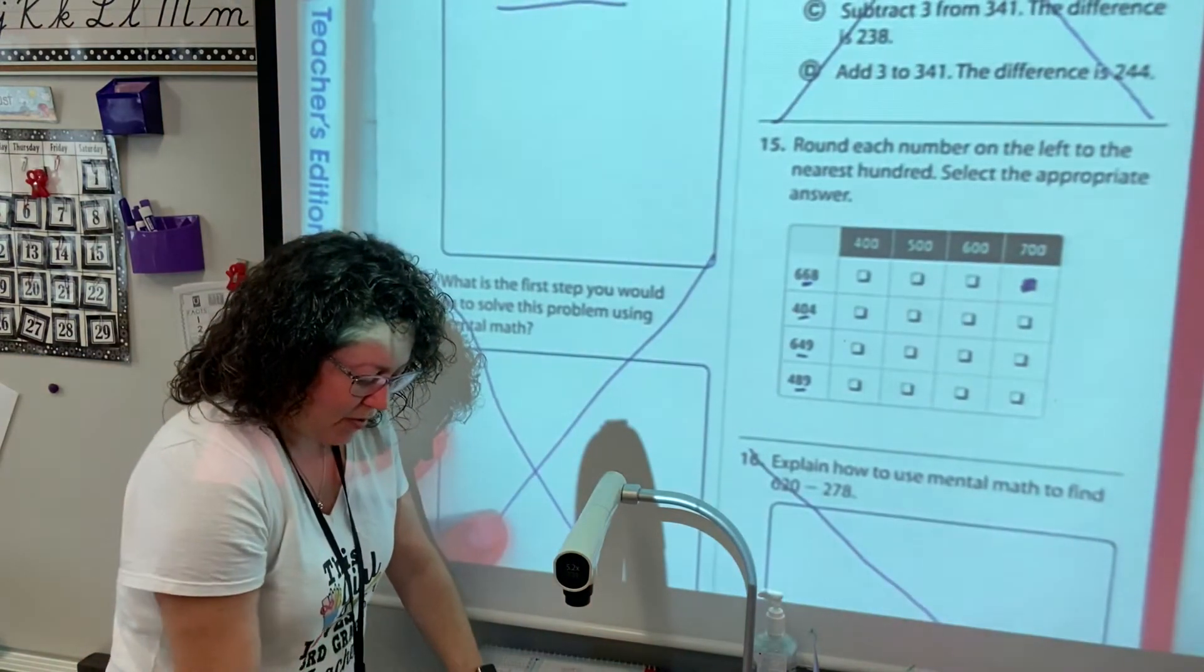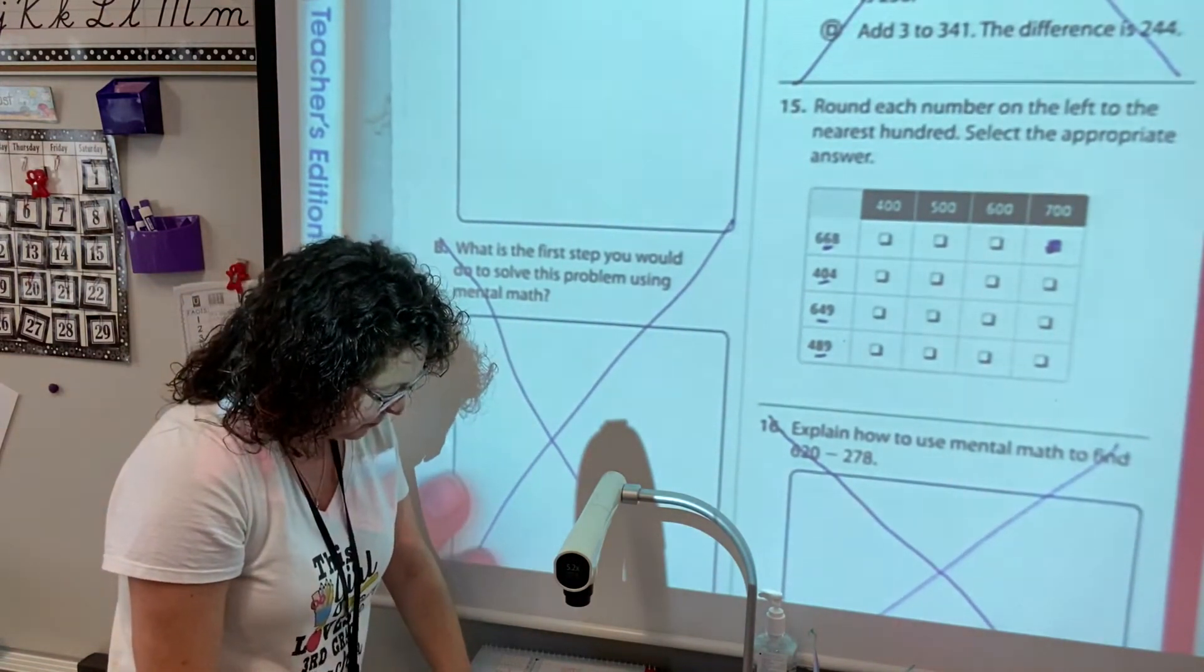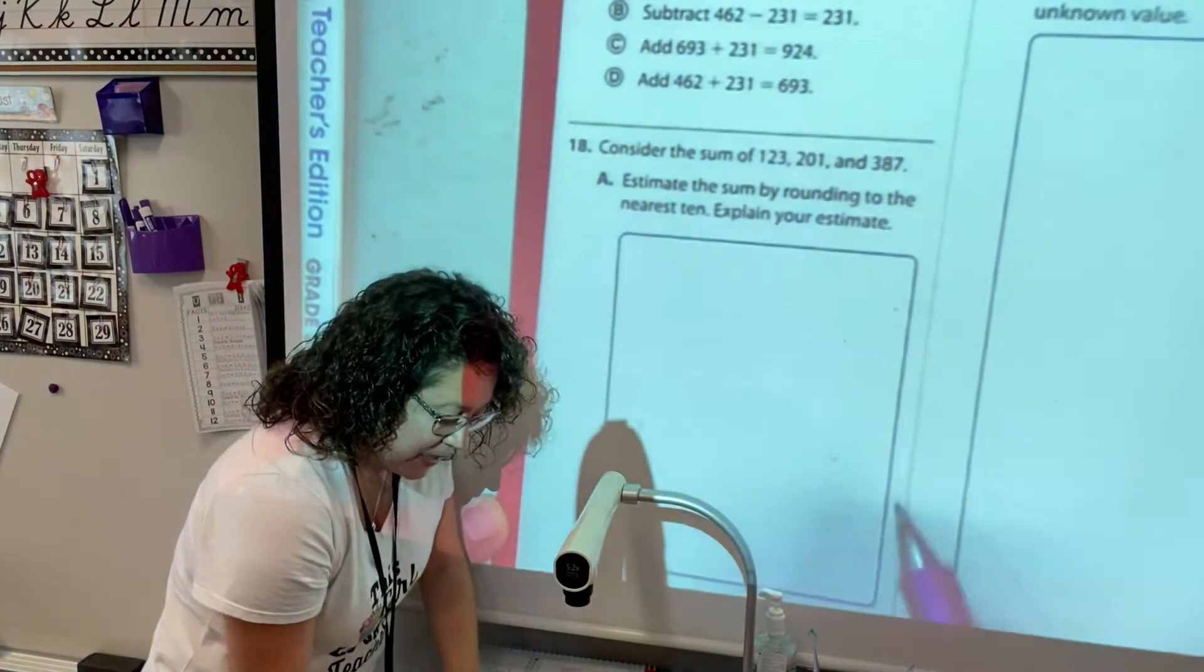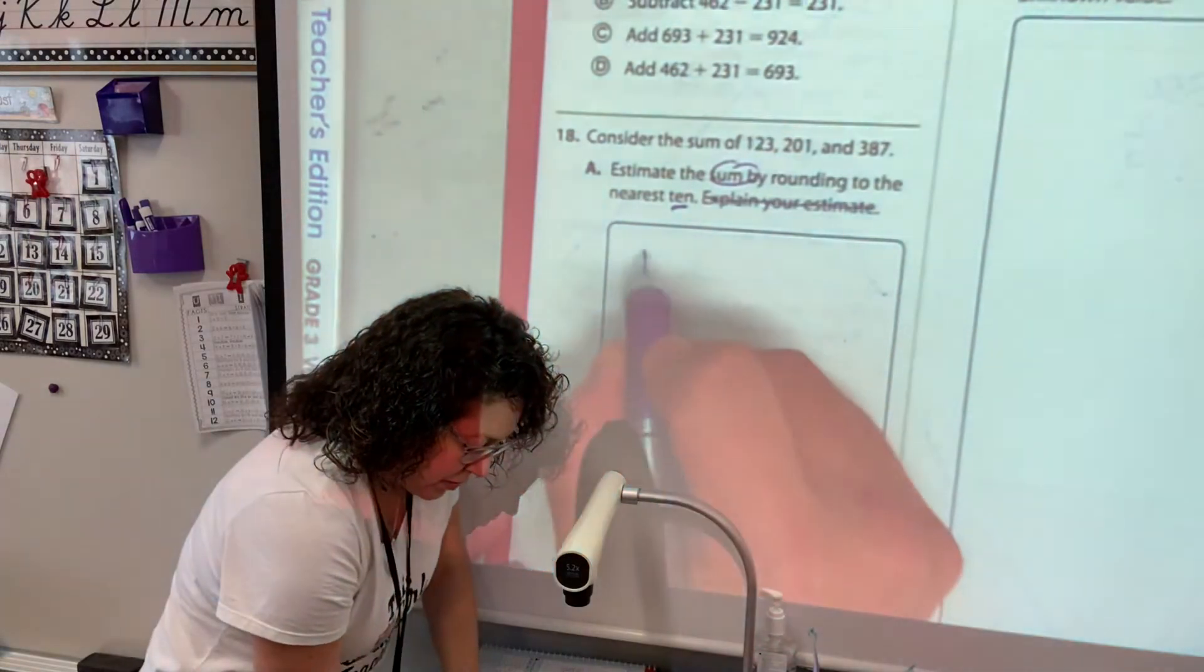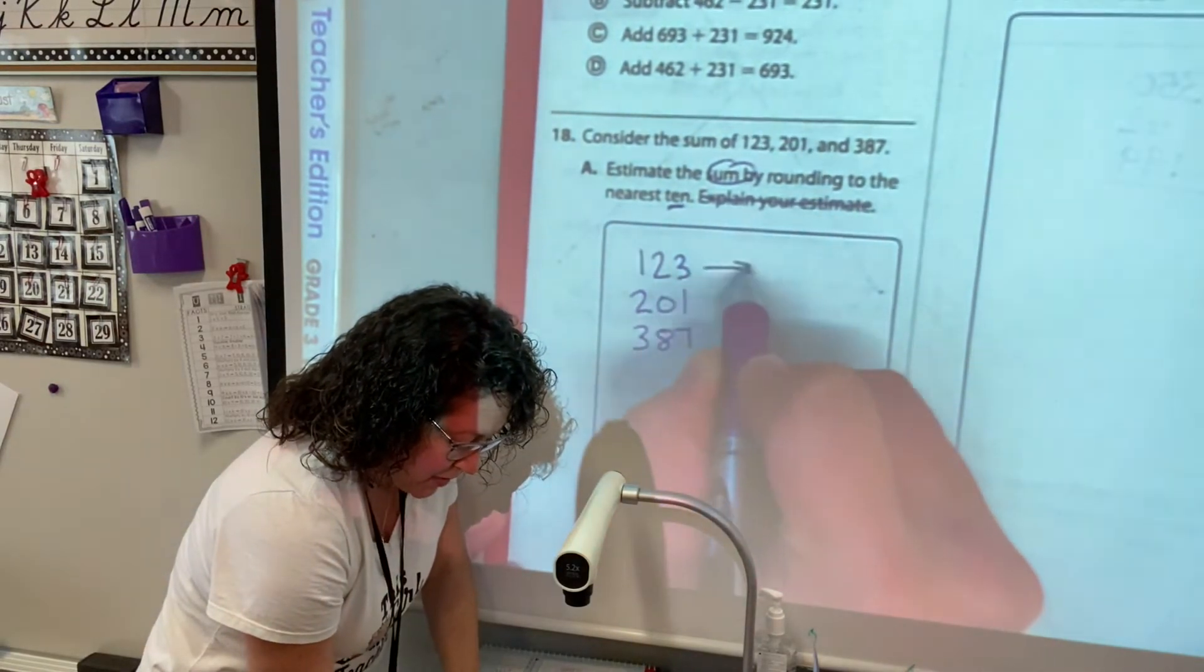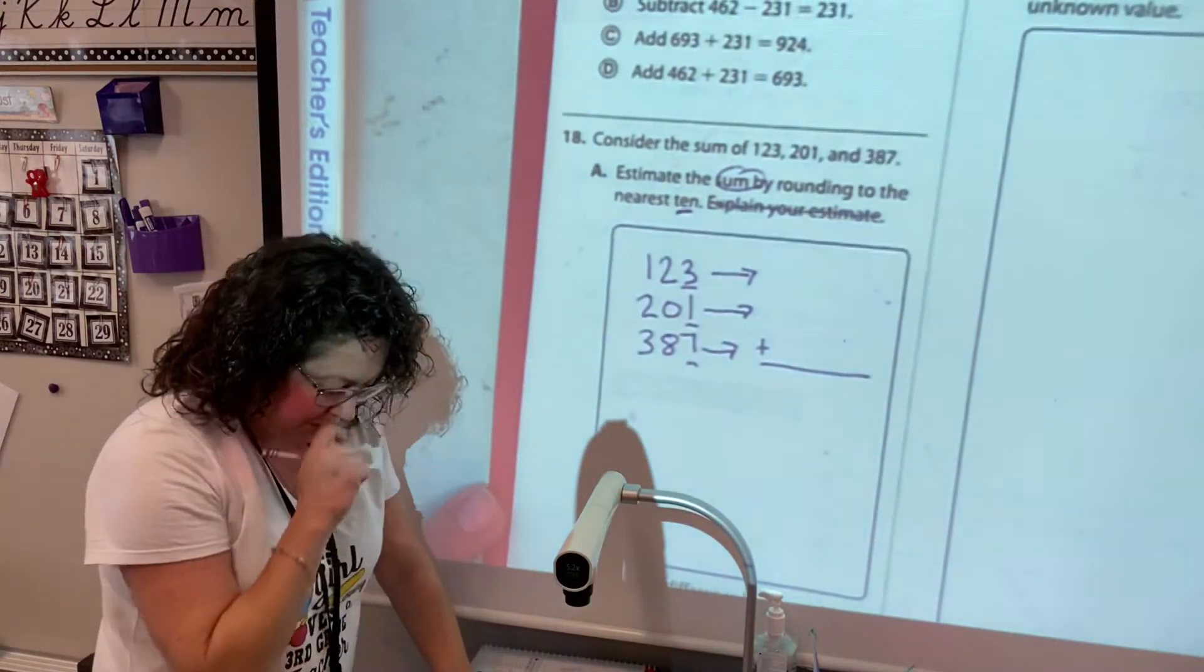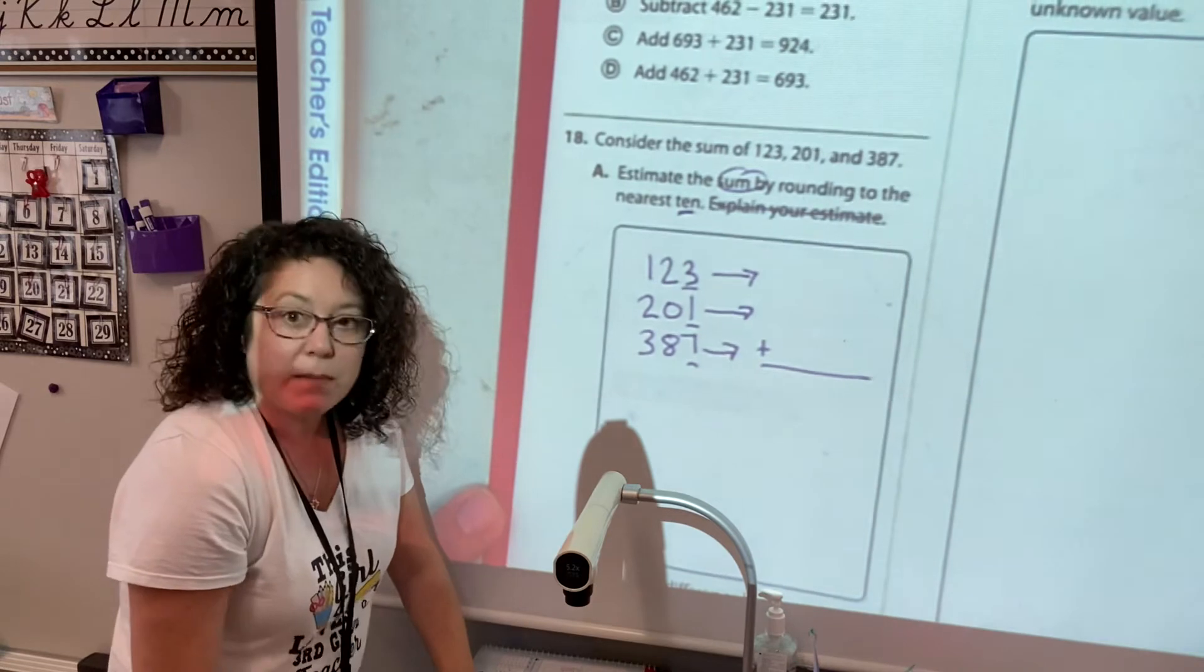All right, number 16, you can X out. Some of these questions are just, we don't need all of them. All right, number 17 is good. Number 18, estimate the sum, remember that's adding by rounding to the nearest ten. You don't need to explain, so you're going to round each number. You're going to go to the nearest ten, which means you look at the ones. All right, then you would add your rounded numbers. Part B we're going to X through.